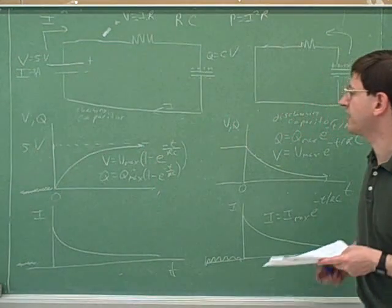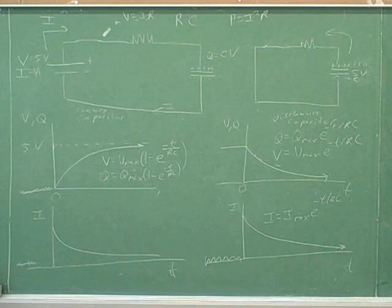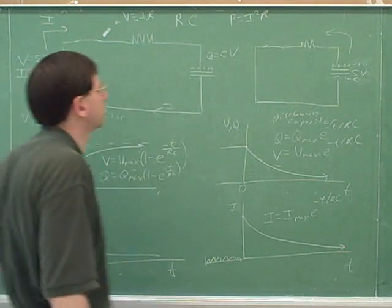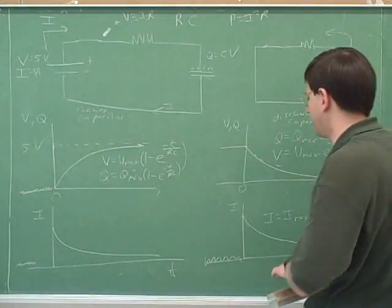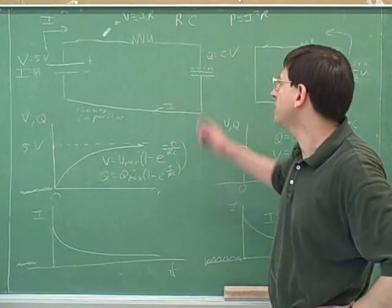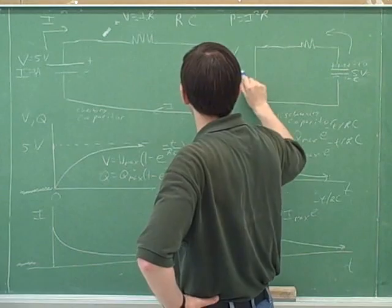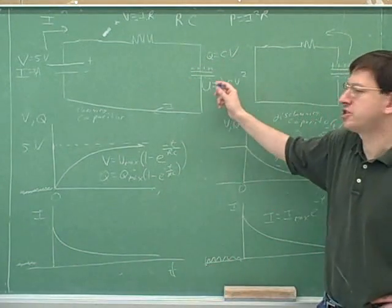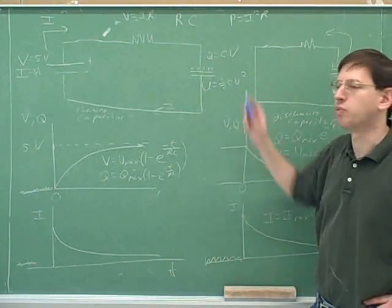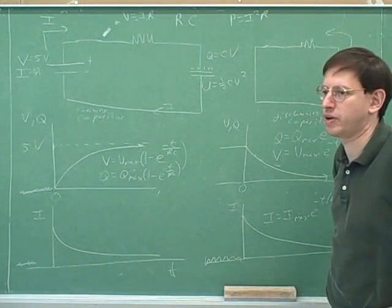Those are the basic ideas we need to understand for a capacitor. The key thing we saw is that the capacitor prevents jumps in voltage and charge, since these are proportional to each other. And we saw that the capacitor is a way of storing energy. How much energy has the capacitor stored? The equation for the potential energy stored in a capacitor is one-half CV squared.